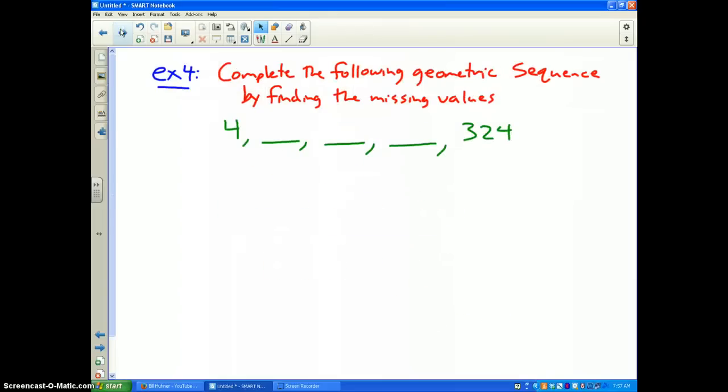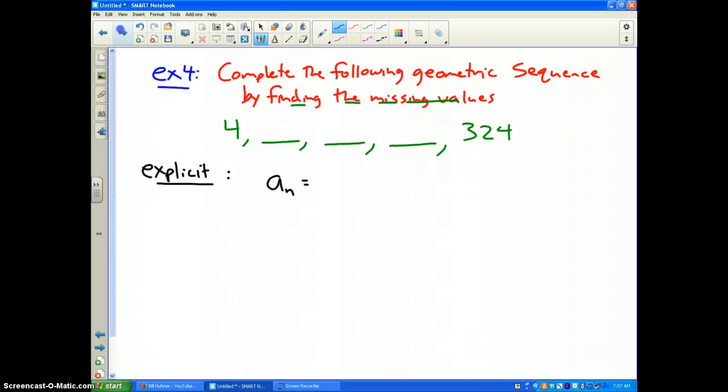Last, what happens if there's a bunch of missing terms in between? It says complete the following geometric sequence by finding the missing values. Well the geometric mean will not work for this one. So what we need to do is go back to the explicit formula and we need to use the explicit formula and fill in what we know to find our common ratio.